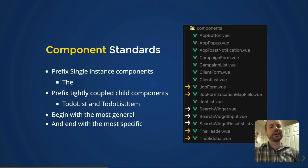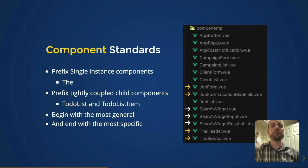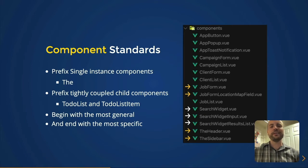The style guide also suggests prefixing tightly coupled child components with the parent component's name. For instance, you could have a TodoList component and a TodoListItem component. You could have a JobForm and a JobFormLocationMapField. Sometimes this can get a little wordy, but it groups them together and helps people know they're coupled. Lastly, begin with the most general term in your component name and end with the most specific — like SearchWidget, SearchWidgetInput, and SearchWidgetResultsList.